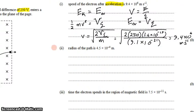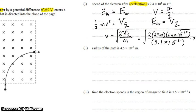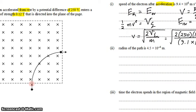The next part asks us to find the radius of the path and show that it's 4.5 times 10 to the negative 4 meters. Well, the object's traveling in a circle, and any time you're traveling in a circle, that means that the sum of the forces is a centripetal force.